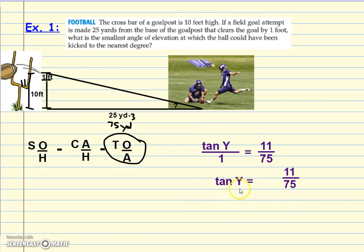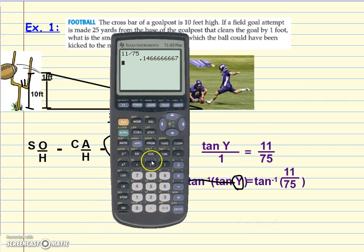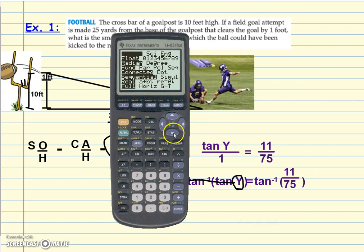Now we want to know the angle of y, not just the tangent of y. So to undo the tangent, do the opposite, which is that inverse tangent. So we're going to inverse tangent both sides—those tangents will cross out and we'll just be left with y. So on our calculator, we're going inverse tangent, second tangent above, of 11 divided by 75. Hit enter. Ooh, now does that seem right? No. My calculator's not in degree mode.